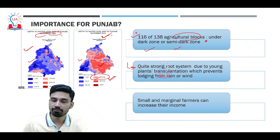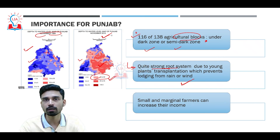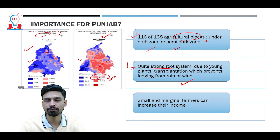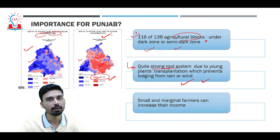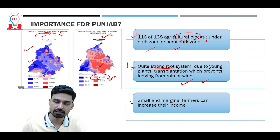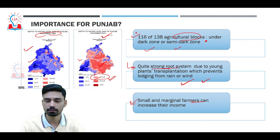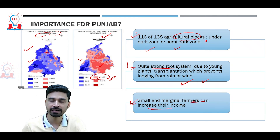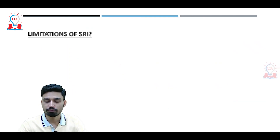SRI-cultivated rice has a strong root system because very young plants are transplanted, which also prevents lodging from rain. Even in storms, strong rainfall, thunderstorms, or dust storms, damage to the plants will be minimal. Small and marginal farmers, due to the very low input requirements, can substantially increase their income.